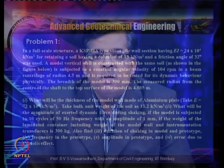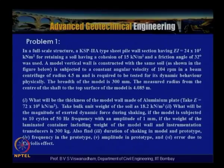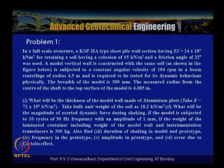After having seen different avenues for inducing earthquake and scaling considerations, let us look into this problem. In a full-scale structure, a KSP-2-type sheet pile wall section having flexural rigidity EI = 24 × 10⁴ kN·m² retaining a soil with cohesion 15 kPa and friction angle 30° was used. A model vertical wall is constructed with the same soil and subjected to a constant angular velocity of 104 rpm in a beam centrifuge of radius 4.5 m, tested for dynamic behaviour.